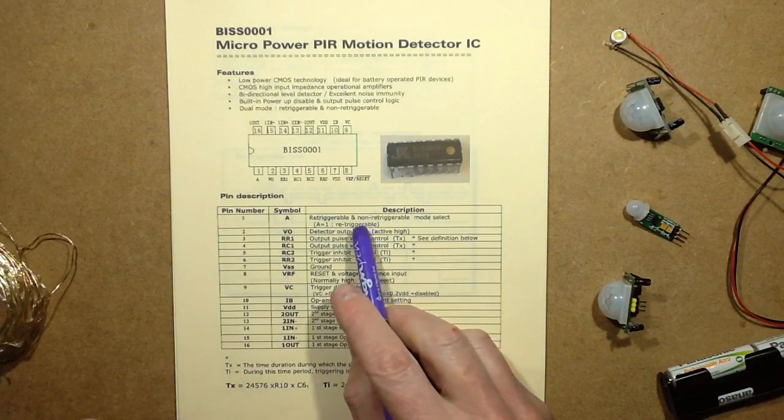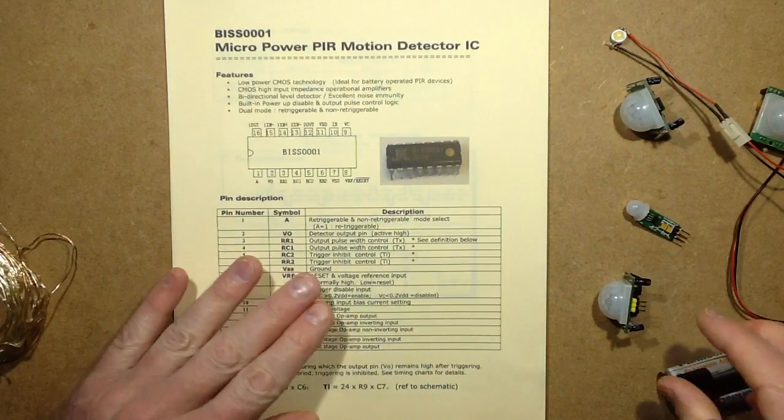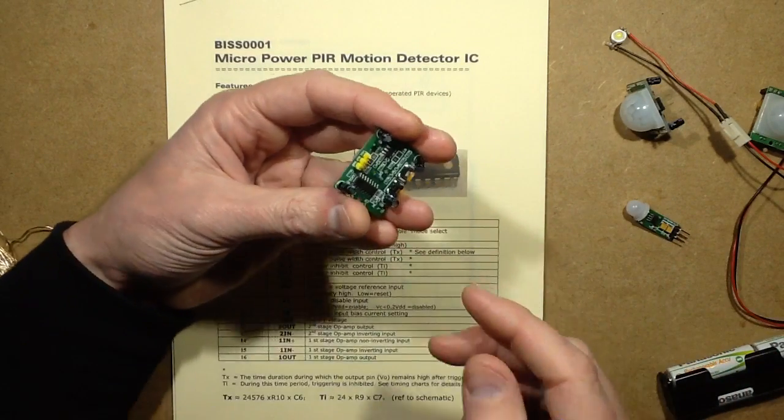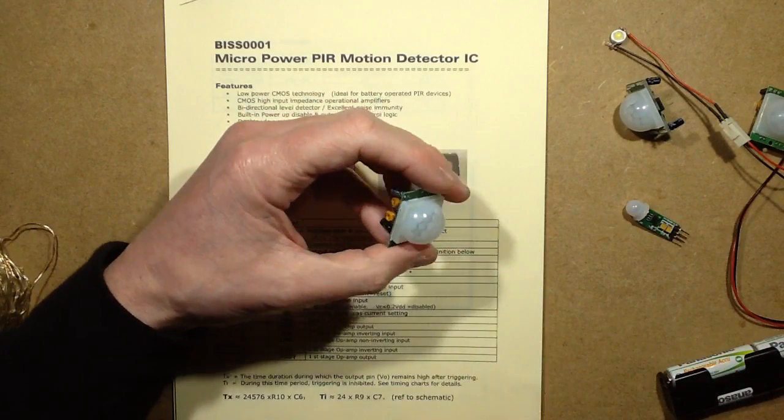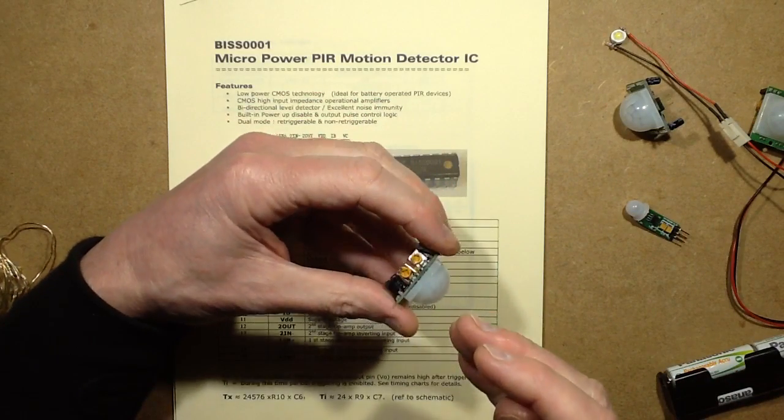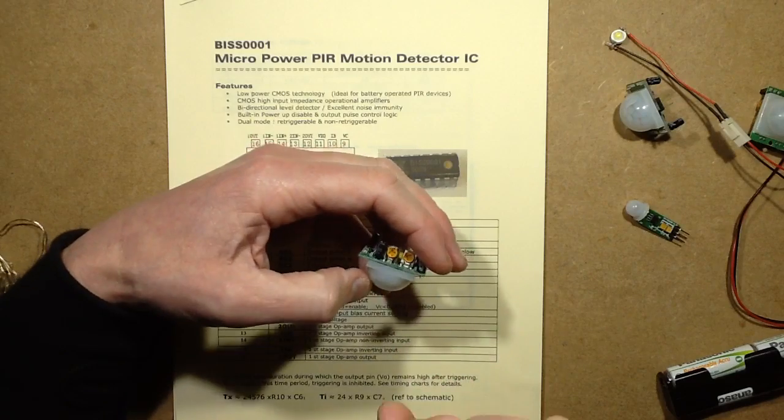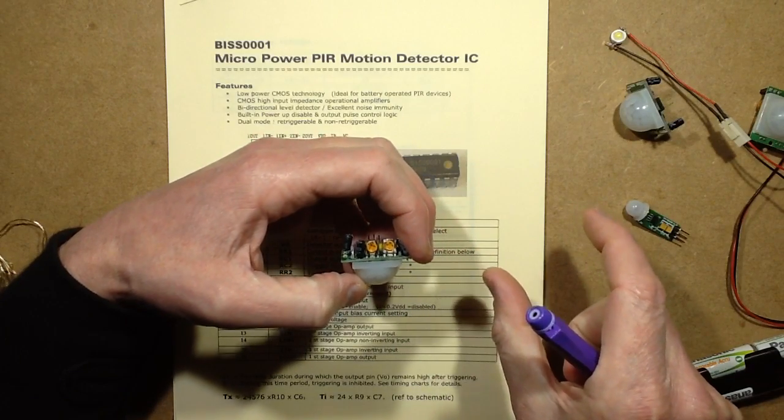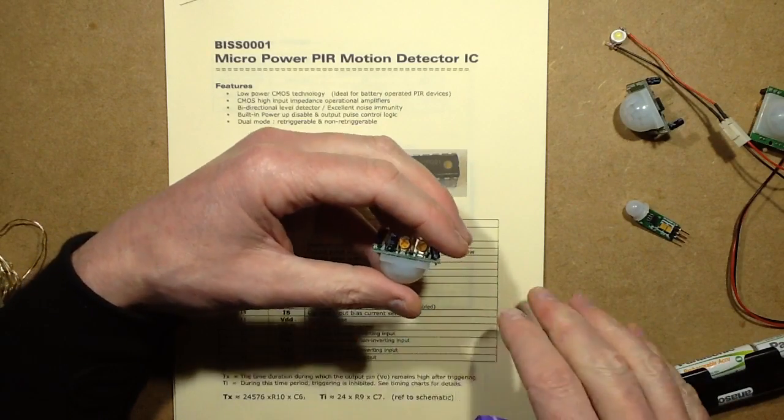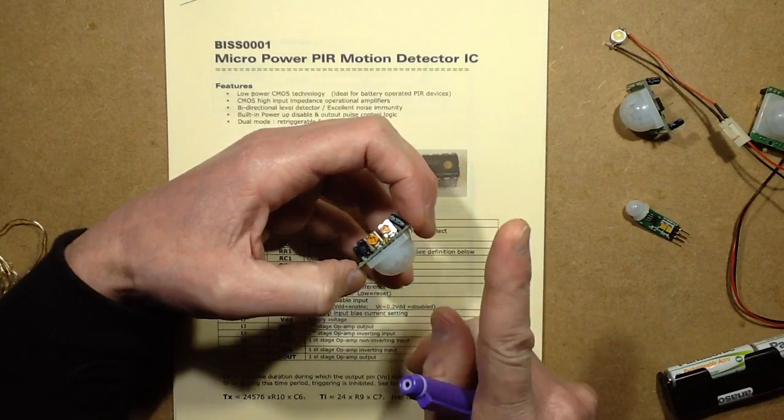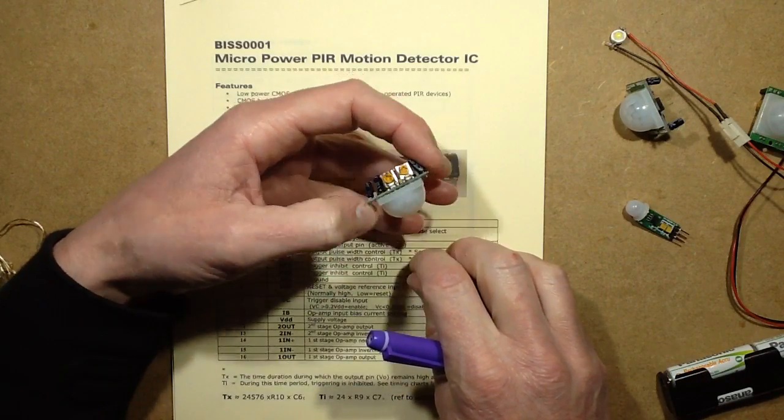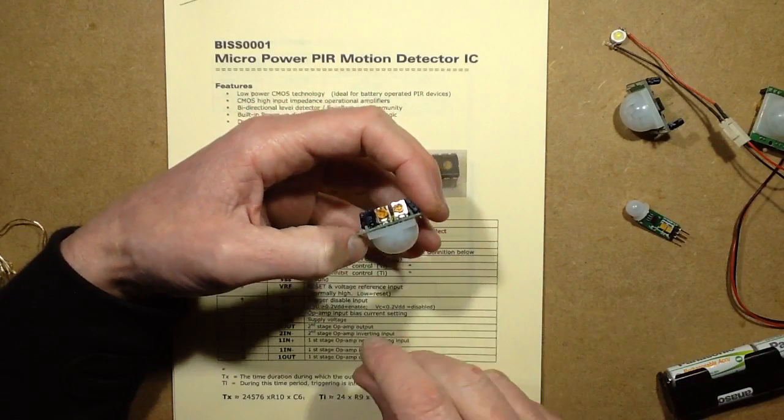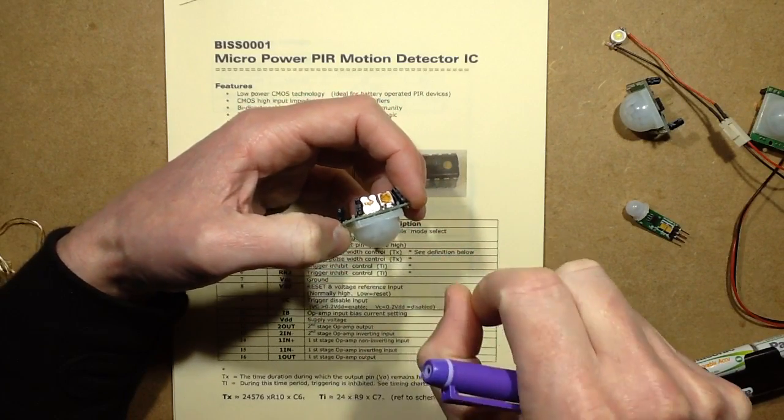The best mode for these is re-triggerable. Basically what this means is that when you walk in front of it and it detects you, if it's non-re-triggerable, it would just do one time delay, and no matter if people were still walking about in front, it would still do that one time delay and then go out. If there's a lot of movement it just keeps going on and off all the time.